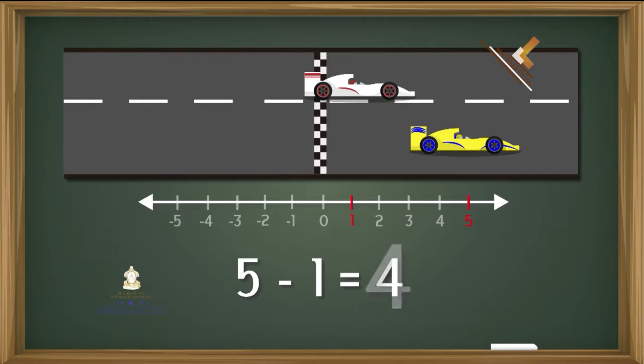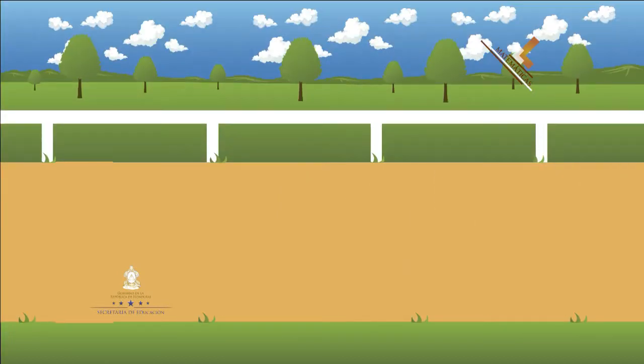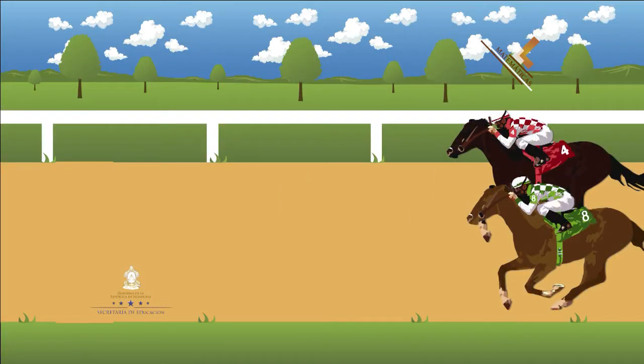Esto quiere decir que la diferencia final fue de 4 posiciones, una carrera sin duda para el auto amarillo. A continuación nos dirigimos a una carrera de caballos. Al sonido del disparo inicia esta carrera. En sus marcas, listos, ¡pum!